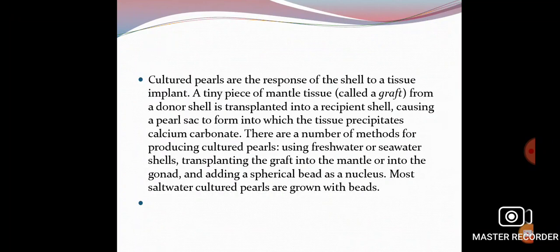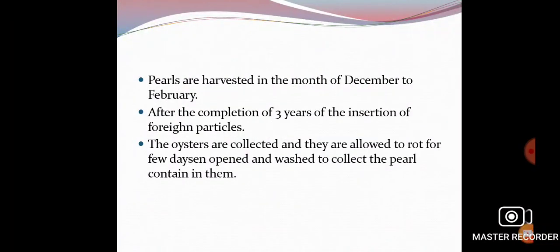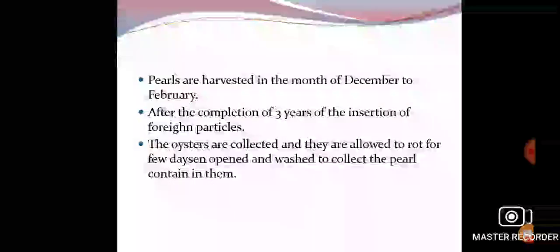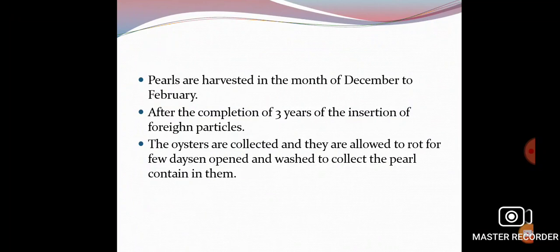This is called a cultured pearl. Artificial implantation forces the oyster to form the pearl inside its body. Harvesting of the pearls also takes place — harvesting means to kill the oyster and pull their shell open. Pearls are harvested in the month of December to February after the completion of three years of insertion of foreign particles.